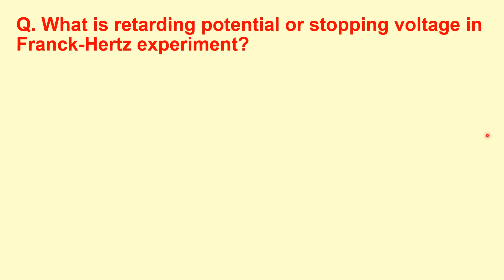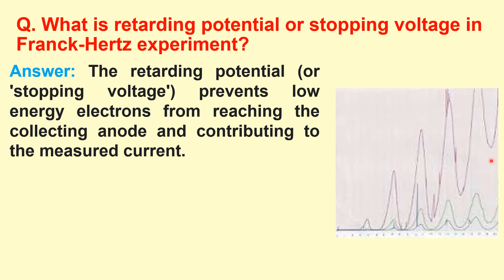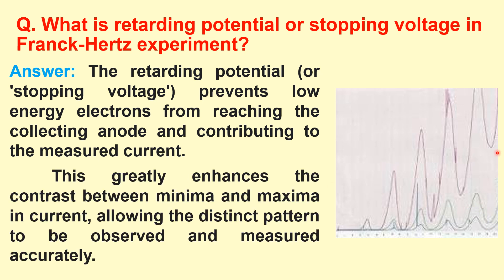What is retarding potential or stopping voltage in the Frank-Hertz experiment? The retarding potential or stopping voltage prevents low-energy electrons from reaching the collecting anode and contributing to the measured current. From the graph, this retarding potential gives us distinct peaks for maxima and minima; otherwise we would get lower, less distinct curves. It enhances the contrast between minima and maxima of current and allows us to find the distinct pattern of the measured spectrum.